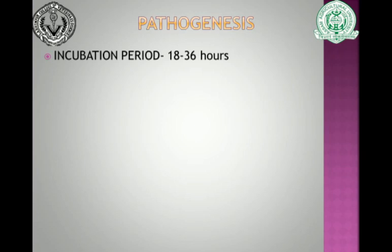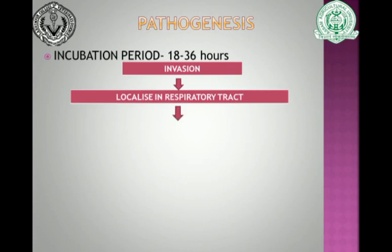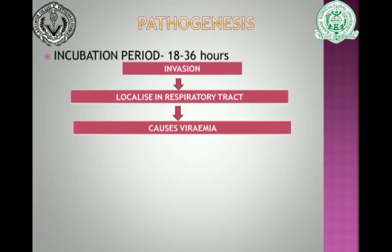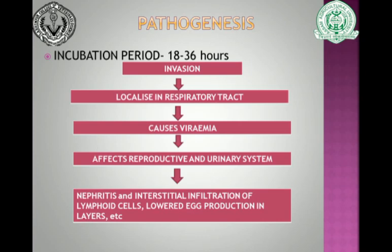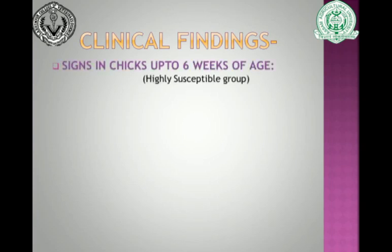The incubation period of the disease is 18 to 36 hours. After invasion, the virus first localizes in the respiratory tract and then reaches the blood, causing viremia. Before reaching the blood it causes damage to the respiratory tract, leading to respiratory symptoms. After viremia, it spreads to the reproductive and urinary systems — causing lowered egg production in the reproductive system, and nephritis with interstitial infiltration of lymphoid cells in the urinary system.